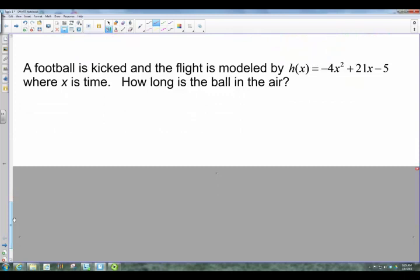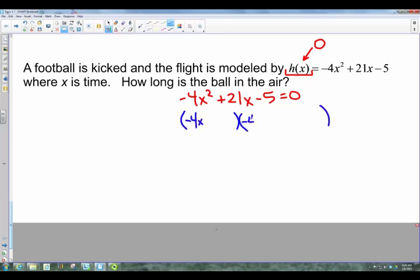Word problem: A football is kicked and the flight is modeled by h(x) = -4x² + 21x - 5, where x is time. How long is the ball in the air? So we are trying to find x. When the ball hits the ground, your height is going to be zero because the ball is now striking the ground. So we're going to take that function, -4x² + 21x - 5, and set it equal to zero. We want to know when the ball has hit the ground. So to start this, we factor. You've got your -4x here, -4x here, and now you multiply across: -4 times -5 is positive 20.